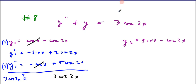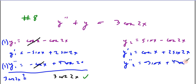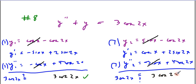Checking y2: y2 prime is cosine x plus 2 sine 2x, and y2 double prime is minus sine x plus 4 cosine 2x. Adding the double prime to the original y2: the sine x and minus sine x go away, and 4 cosine 2x minus 1 cosine 2x gives 3 cosine 2x. The solution checks.